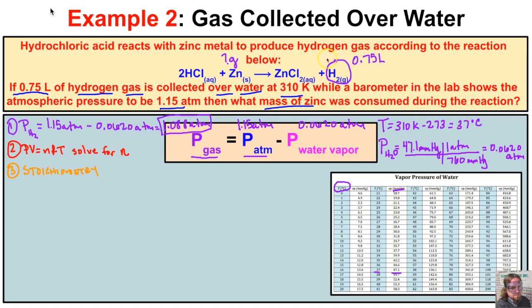Therefore, the pressure of our hydrogen gas is 1.15 atm − 0.0620 atm = 1.088 atmospheres. We'll use this value in Step 2.